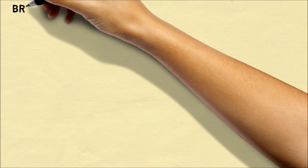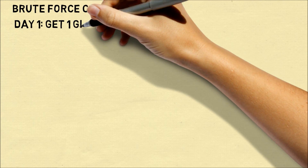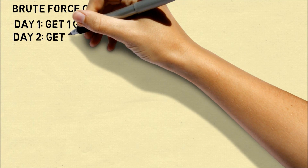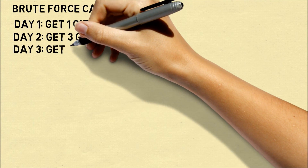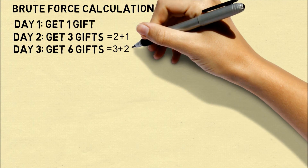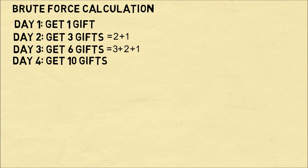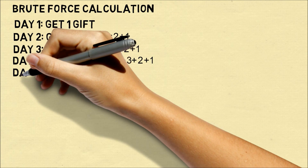One way you can solve this is simply by adding up the number of gifts each day. On the first day you get one gift. On the second day you get three gifts because you get two plus one. On the third day you get six gifts, which is three plus two plus one. On day four you get ten gifts, which is four plus three plus two plus one. And you get the pattern.